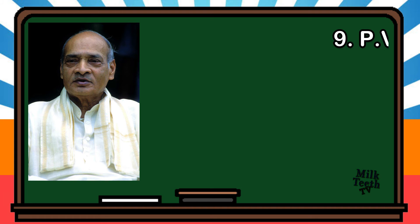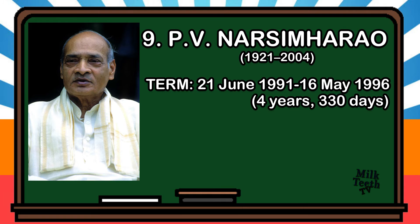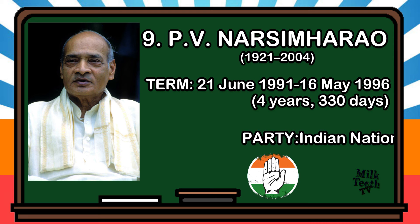The ninth Prime Minister of India was P.V. Narasimha Rao. He was born in 1921. His term as Prime Minister began on 21st June 1991 and ended on 16th May 1996, for a period of 4 years and 330 days. Party: Indian National Congress.